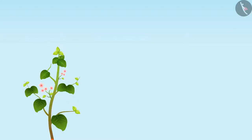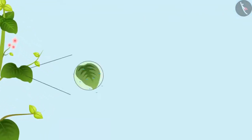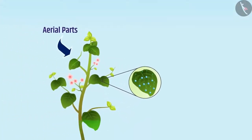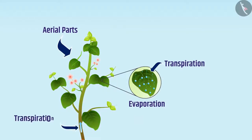Similarly, there is loss of water in the form of vapour from the aerial parts of the plant, which is called transpiration. This evaporation creates a suction called transpiration pull, due to which water gets pulled upward and can reach various parts of the plant. Transpiration also regulates plant temperature.